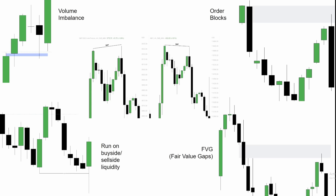Here are some examples of what I look for in my checklist for price running into higher time frame levels. In the top left we have a bullish volume imbalance. If I'm looking at price on the daily or weekly and I see a candle coming down into a bullish volume imbalance, I will be watching price on the lower time frames — the 15-minute, 5-minute, 3-minute, 2-minute, and 1-minute — for a potential entry point based on a reaction off of that bullish volume imbalance.